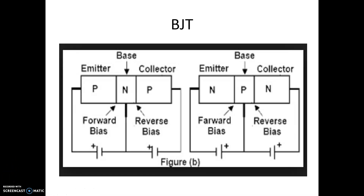There are mainly two types of BJTs — one known as PNP and the other known as NPN. There are three terminals in a bipolar junction transistor: one known as the emitter, another the base, and the other the collector. The emitter emits the electrons and the collector collects the electrons via the base.